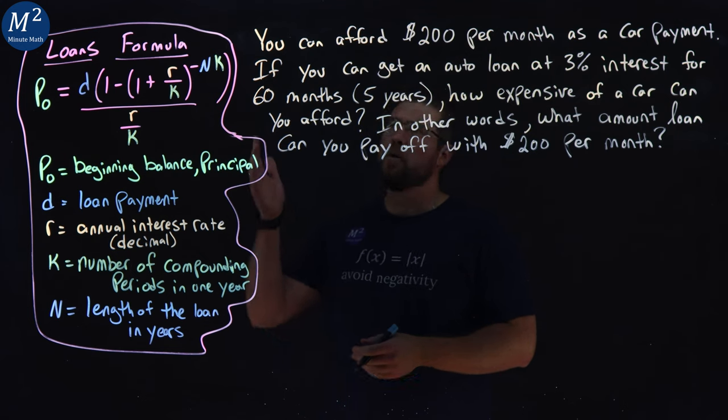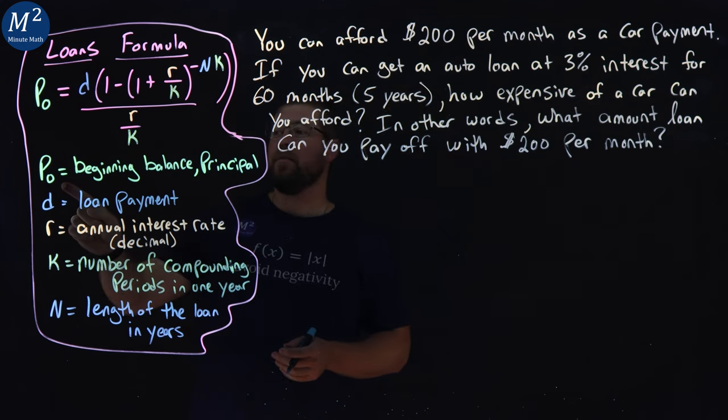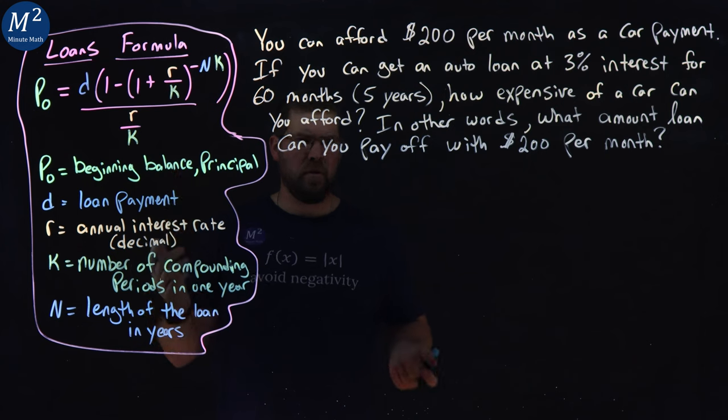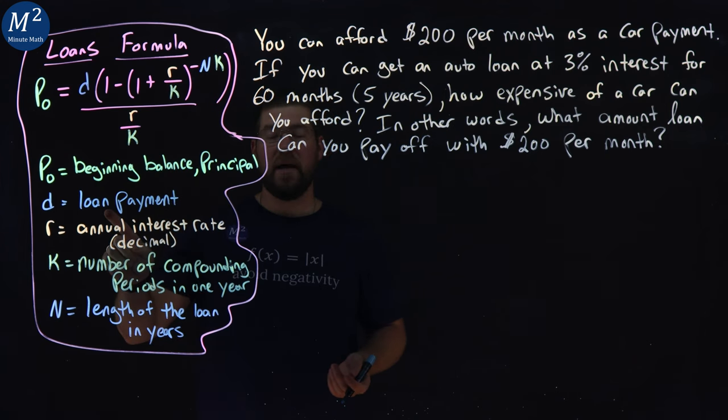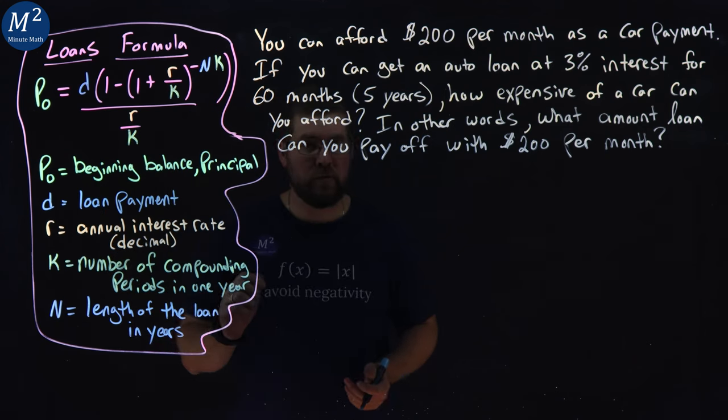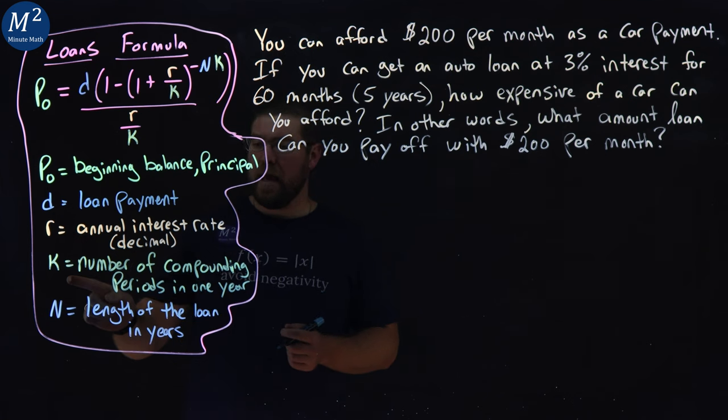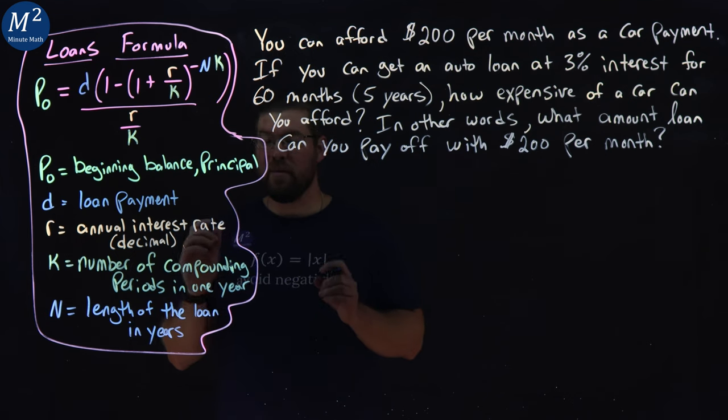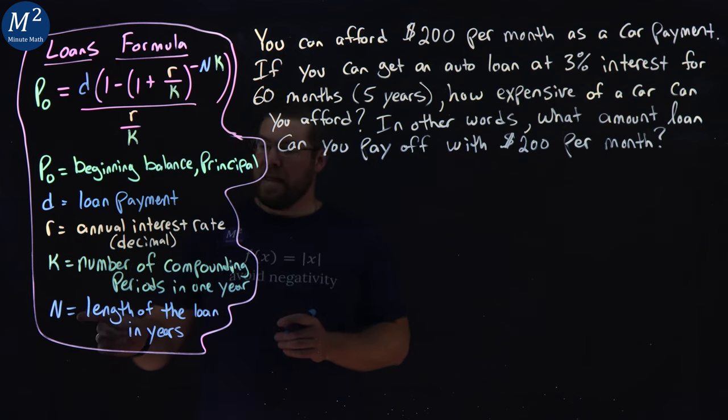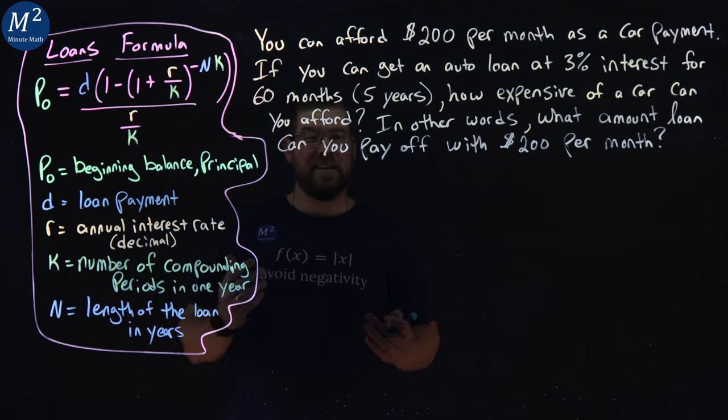We have our loans formula we're going to be using. We have P sub O, which is our beginning balance or principal. D is a loan payment. R is the annual interest rate as a decimal. K is the number of compounding periods in one year. And N is the length of the loan in years.